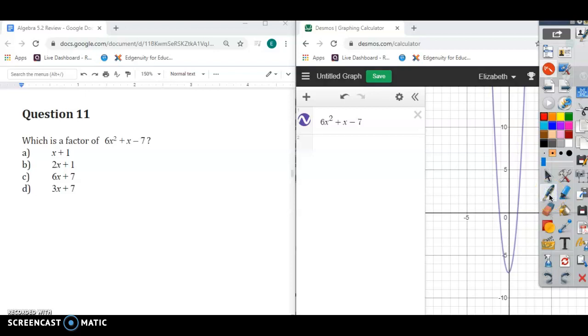Okay, question number 11 can also be done on Desmos. If you type the equation in Desmos, this is what happens. And we're looking for the factors that will go through one of those two solutions. Remember, these are solutions.